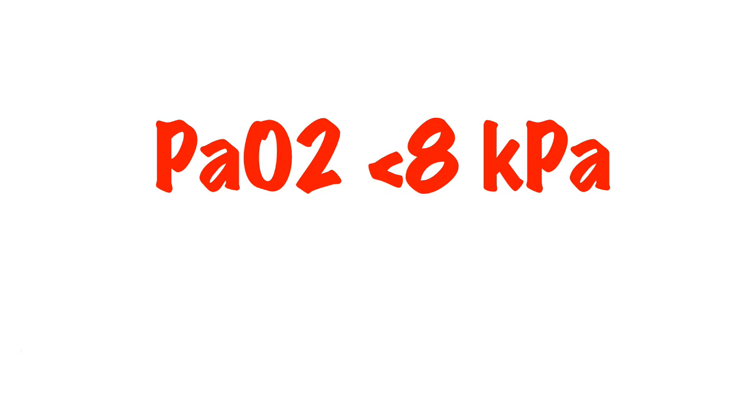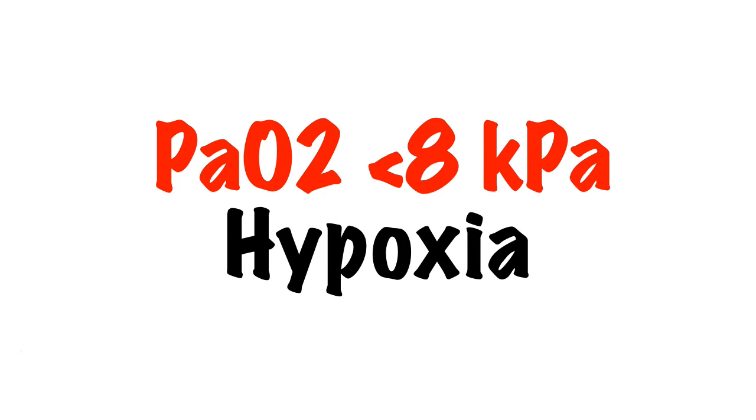If the partial pressure of oxygen drops below 8 then we usually consider the patient to be hypoxic. It's vital to know how much oxygen the patient is on when looking at an arterial blood gas.